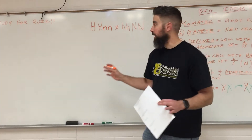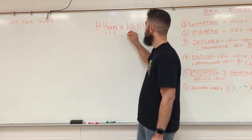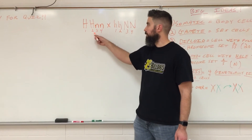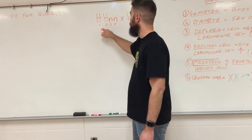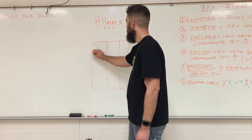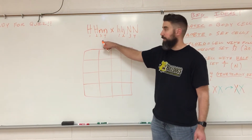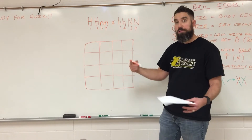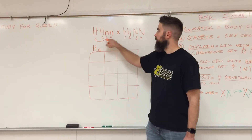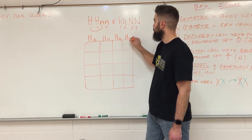We didn't get this in class, so pay attention. The way I like to show you how to set these up is to number the alleles: one, two, three, four. Then number the other parent's alleles. And then think: one to three, one to four, two to three, two to four — that's how you split and match up the alleles. This is the 16-square Punnett Square. One parent goes up top, but you have to separate the alleles out. The other parent goes on the left side — separate the alleles out. One to three gives you big H, little n; one to four gives you big H, little n; two to three gives you big H, little n; two to four gives you big H, little n.